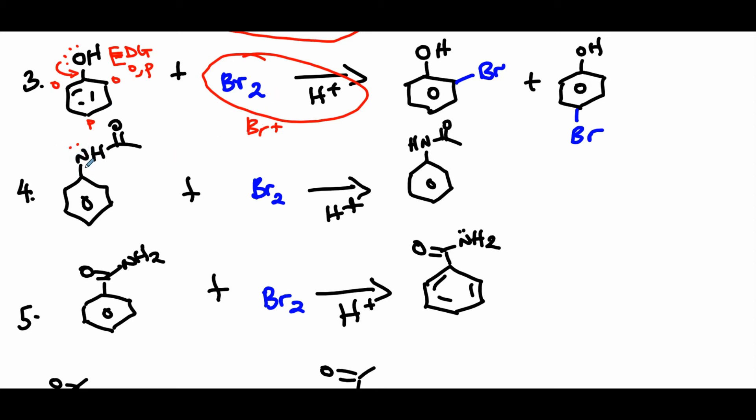Now in the next example, again you have an atom having a lone pair which can be donated towards the ring by resonance. So this is a strong electron donating group and it should also direct ortho para. This time the group is bulky, so the major should be para position with minor ortho.